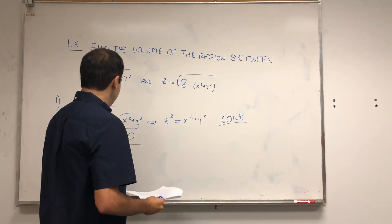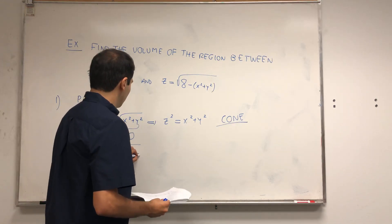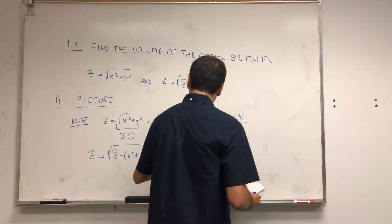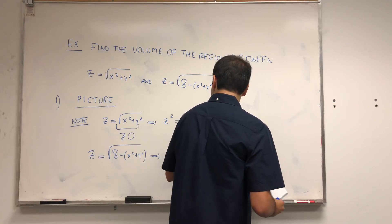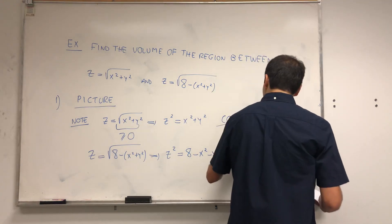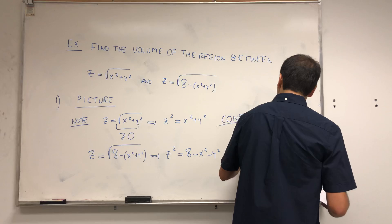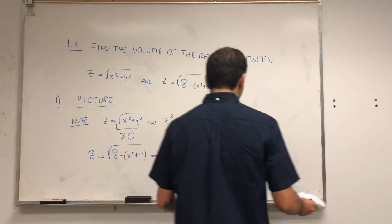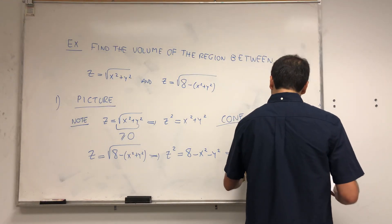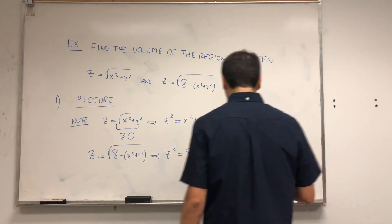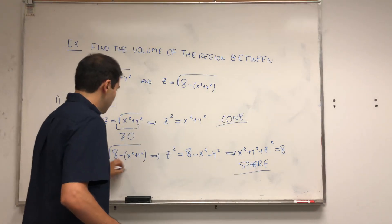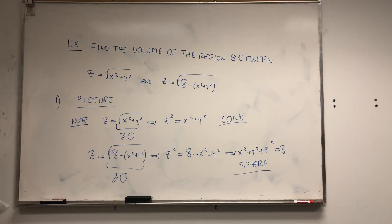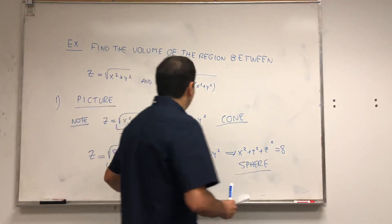And z equals 8 minus x squared plus y squared, that is z squared equals 8 minus x squared minus y squared, which becomes x squared plus y squared plus z squared equals 8 — a sphere. Again it's greater or equal to zero, so we want a half sphere, a hemisphere.